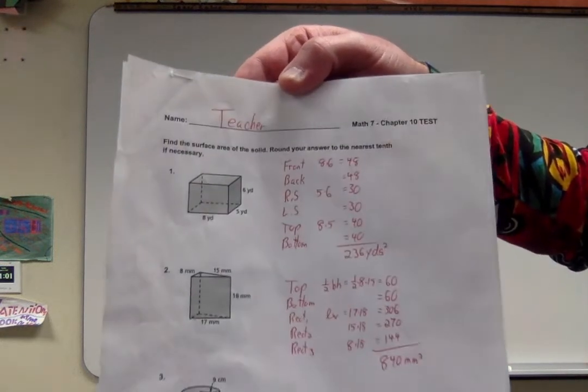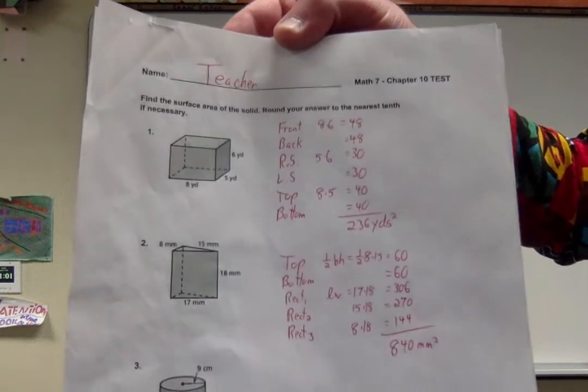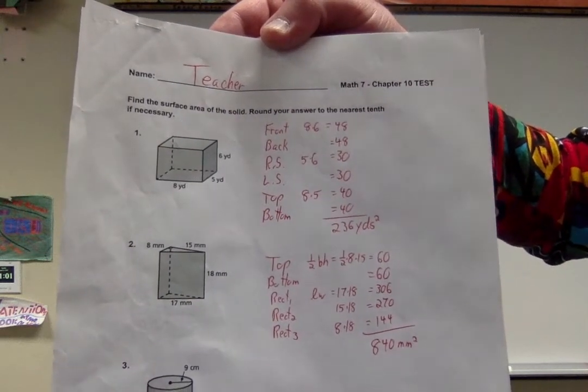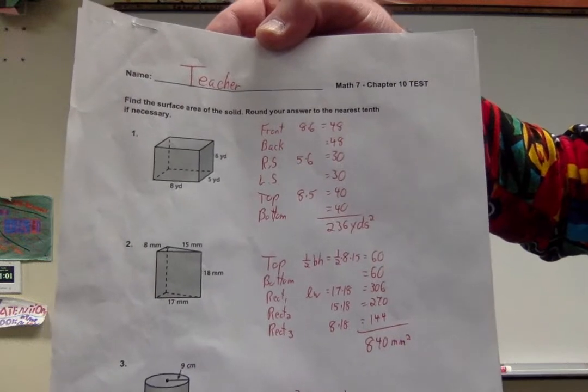Same thing for number two. We got a triangular prism. So what did I do? I found the area of all five faces. Add them up. 840 millimeters squared.